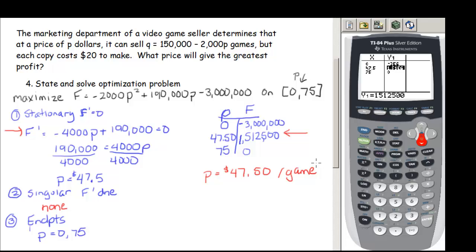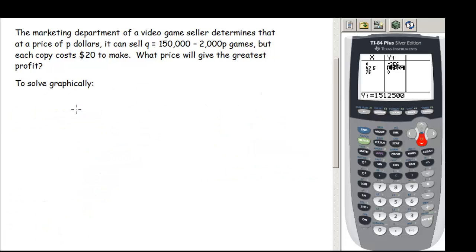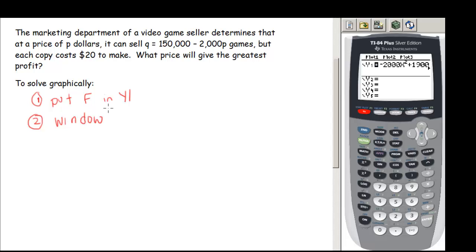Let's see how we could have solved this completely using the calculator. So if we were going to solve this graphically, we would still have our function in Y1. So step one, we would put our F in Y1, which we have already done. Step two, we have to choose that window. So let's go to our window.